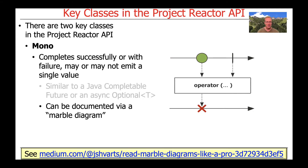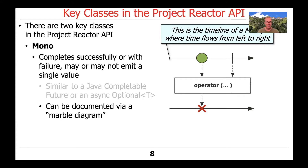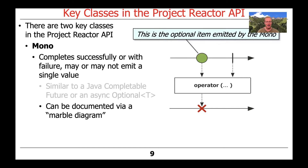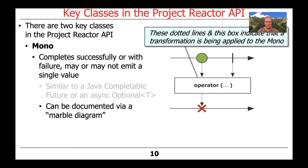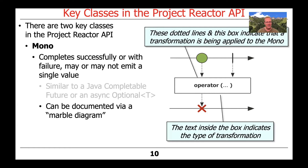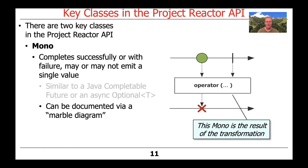You can document the behaviors of the operators in the Mono class by using something called Marble Diagrams, and the link at the bottom of this page describes these diagrams in more detail. This is the timeline of a Mono where time flows from left to right. This is the optional item submitted by the Mono. These dotted lines and this box indicate that a transformation is being applied to the Mono. There are lots of different transformation operators that can be applied to transform a Mono. The text inside the box indicates the type of transformation — basically the name of the method or operator that does the work. This Mono is the result of the transformation, which may be different in type, form, value, and so on.